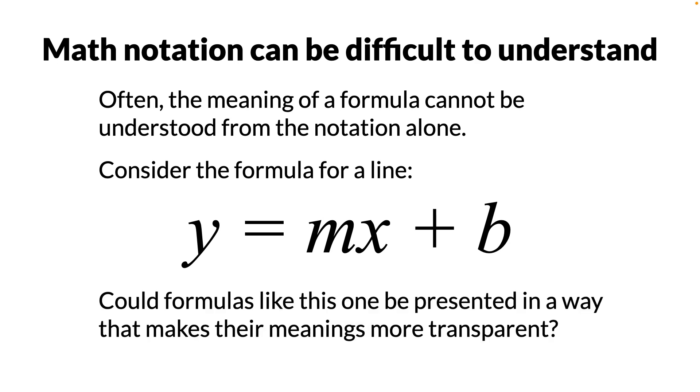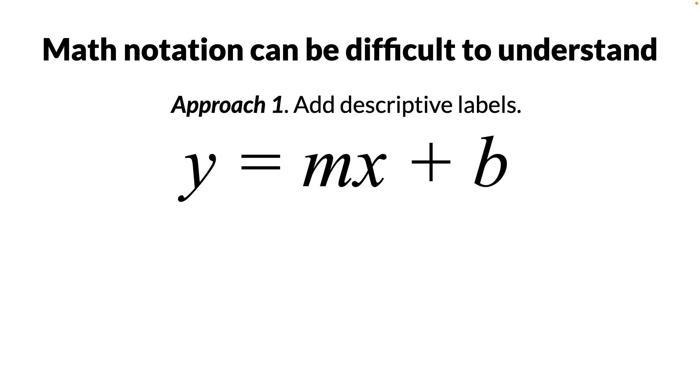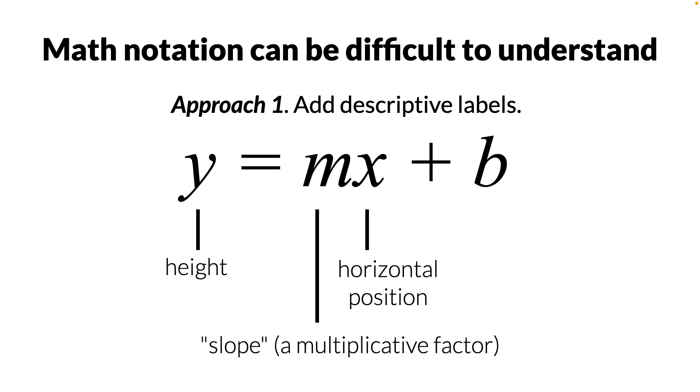Could formulas like this be presented in a way that makes their meanings more transparent? Perhaps they could. One approach is to add labels that explain the meanings of symbols. For instance, labels could indicate that the formula's purpose is to compute the height of a point by taking the point's horizontal position, multiplying it by something we call the slope, or a fixed multiplicative factor, and then adding a constant offset.